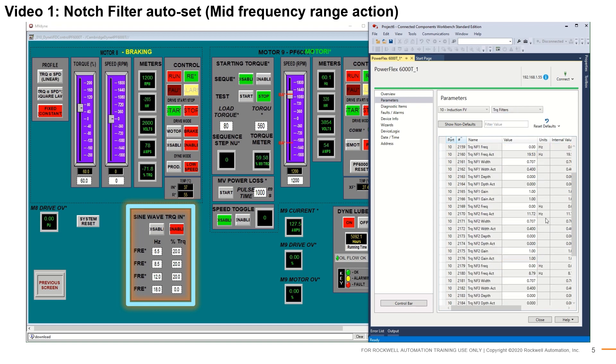Now all four notch filters are set. Removing the harmonic content that initially set the filter does not reset it. This allows the filters to respond immediately to subsequent characteristic resonance events should they occur.